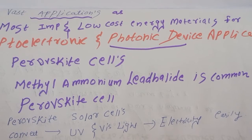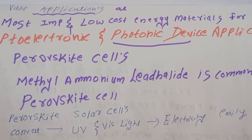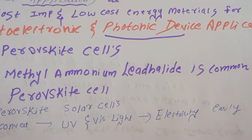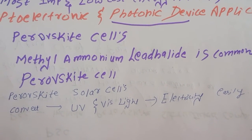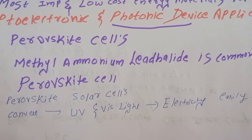Generally because perovskites are not very costly, we can make different varieties of photo cells and generate electricity. The methyl ammonium lead halide is a common perovskite solar cell which is mostly used.